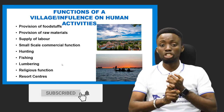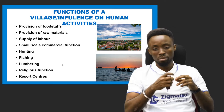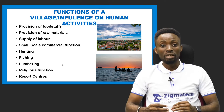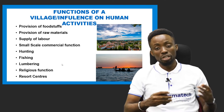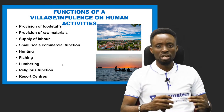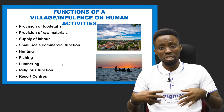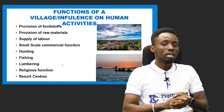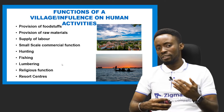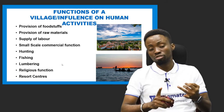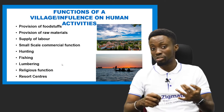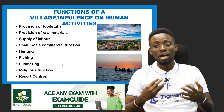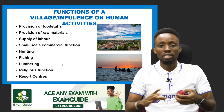The village also performs religious functions — there are churches, mosques, and traditional institutions in the village. Additionally, villages can have resort centers because of the many natural features like rivers and mountains where people can visit. For example, the Obudu Ranch is a less developed place but people go there for relaxation and vacation, appreciating nature. In summary, village functions include food production, raw material supply, labor supply, small-scale commercial functions, primary activities like hunting and fishing, religious functions, and resort centers for tourism.